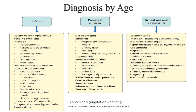Further infant causes include intussusception, malrotation, volvulus, duplication cysts, strangulated inguinal hernia, Hirschsprung disease, inborn error of metabolism, congenital adrenal hyperplasia and renal failure. In pre-school children: gastroenteritis, same infections, otitis media, urinary tract infection, meningitis, whooping cough, appendicitis, intestinal obstruction, raised intracranial pressure, celiac disease, renal failure, inborn error of metabolism, and especially torsion of testis in winter season.